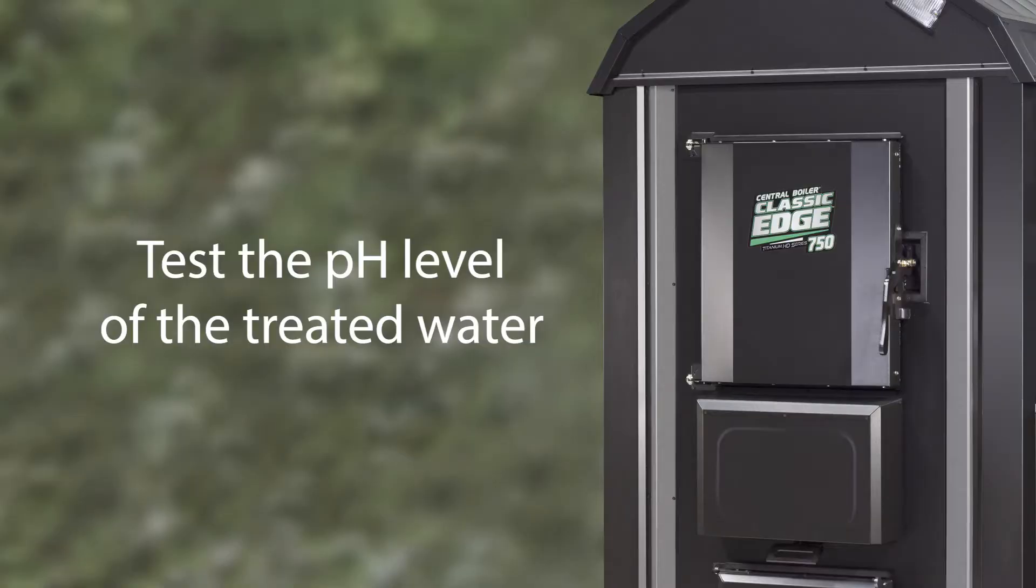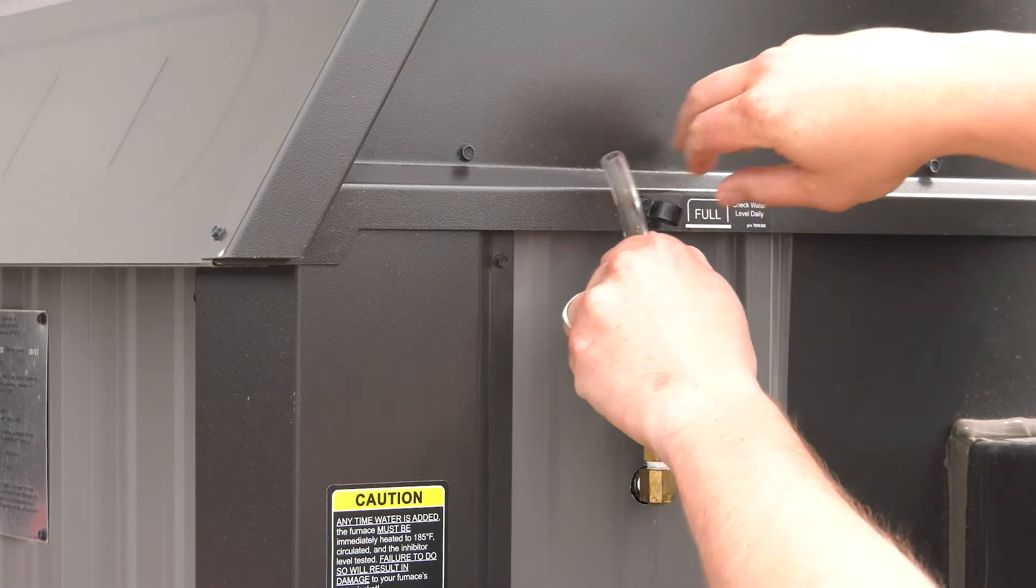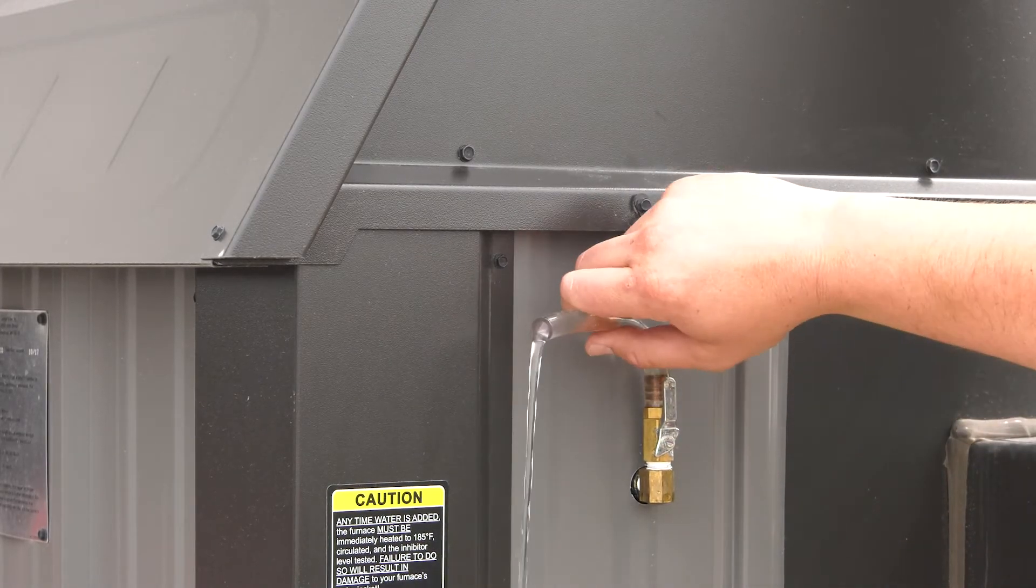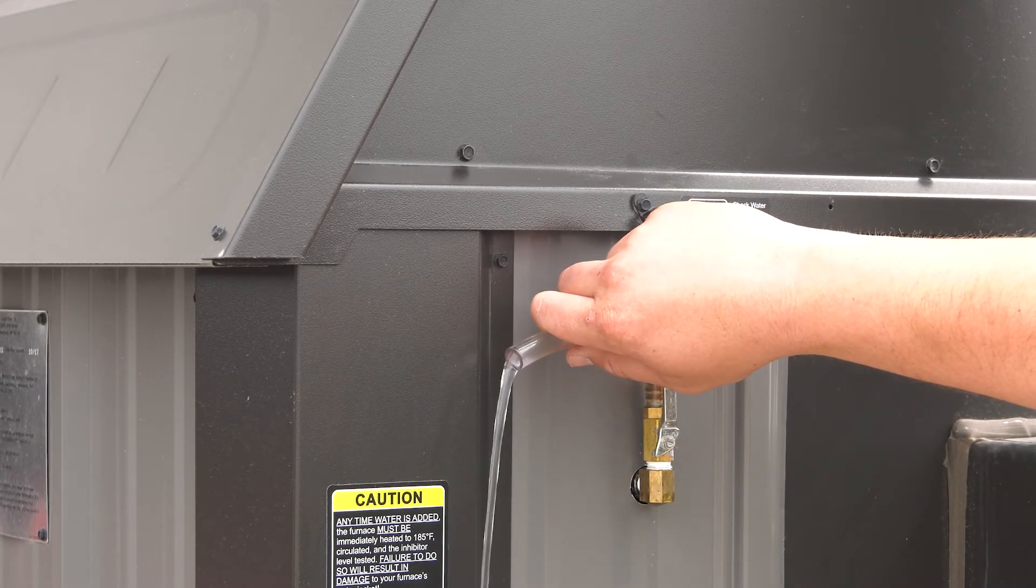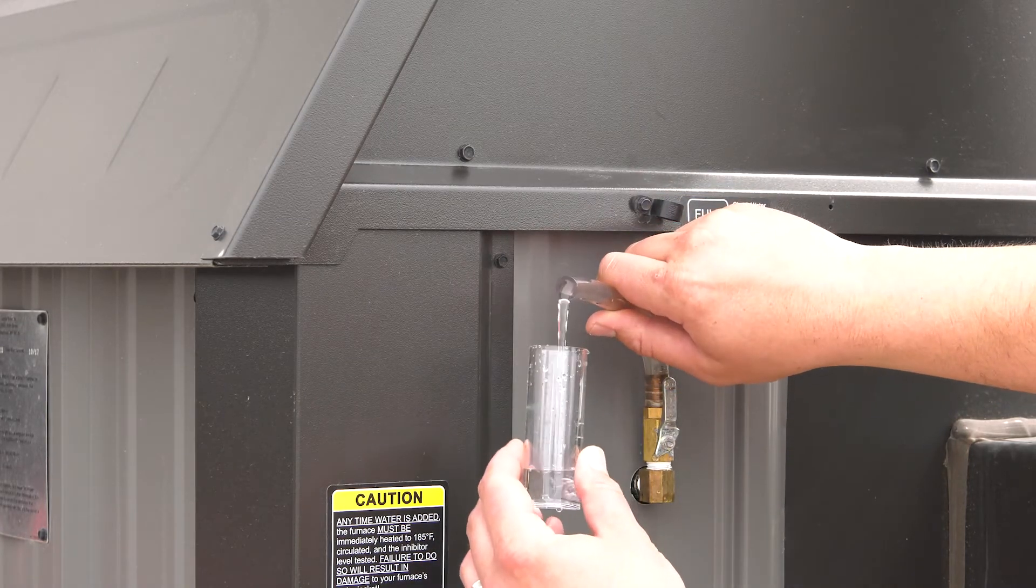Step 3. Test the pH level of the treated furnace water. After the water has been heated and circulated for 24 hours, rinse and fill the sample tube with treated furnace water from the site gauge tube. Drain about a quart of water from the site gauge tube before filling to remove any debris.